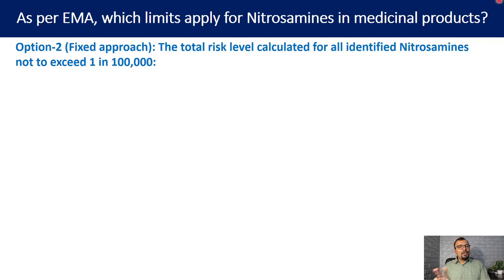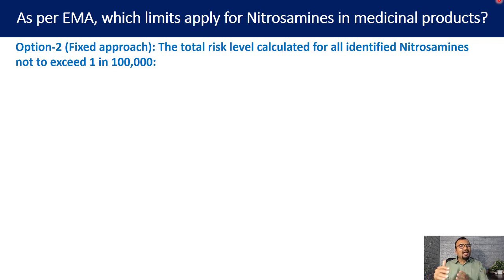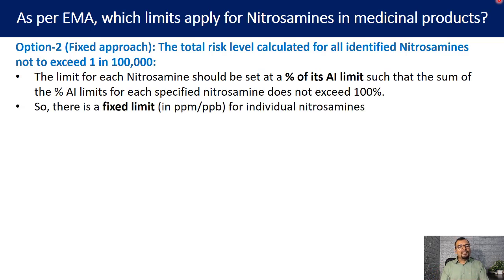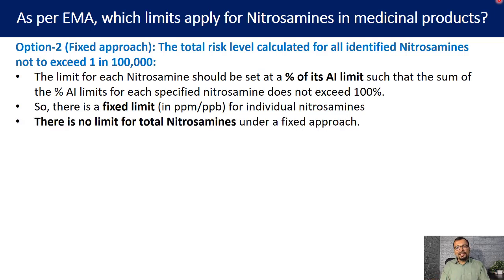Option 2 is further divided into a fixed approach and a flexible approach. In the fixed approach, the total risk level calculated for all identified nitrosamines does not exceed 1 in 100,000 — the conservative approach from ICH M7. The limit for each nitrosamine is set as a percentage of its acceptable intake limit such that the sum of percent acceptable intake limits for all specified nitrosamines does not exceed 100%. There is no need for a total nitrosamine limit under this fixed approach.